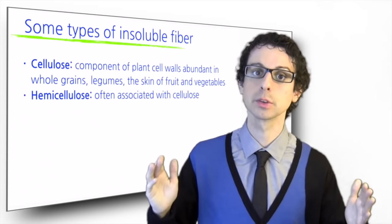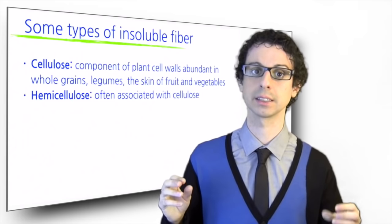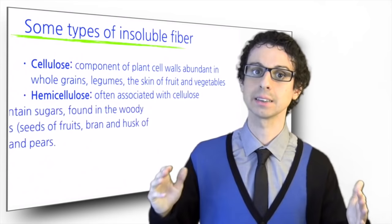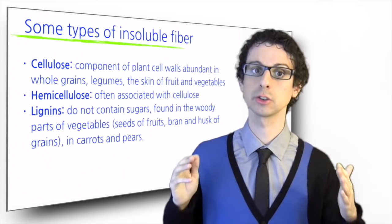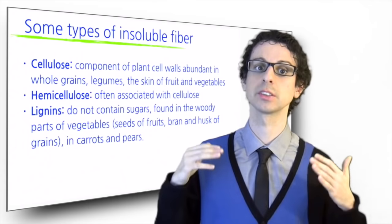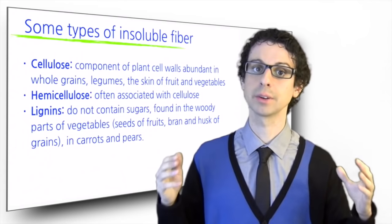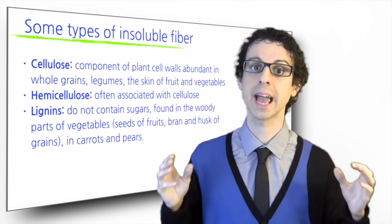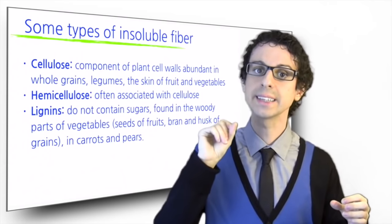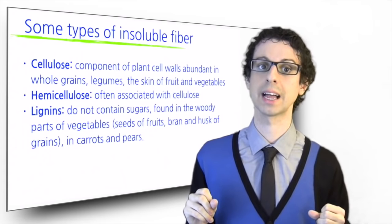Hemicellulose is made of glucose and other sugars, as well as galacturonic acid, and it is often associated with cellulose. Lignins do not contain sugars and are found in the woody parts of vegetables, such as the seeds of fruits, the bran and the outer husk of grains, and are also abundant in carrots and pears. Indeed, the little grainy texture of pears is due to the presence of lignins.